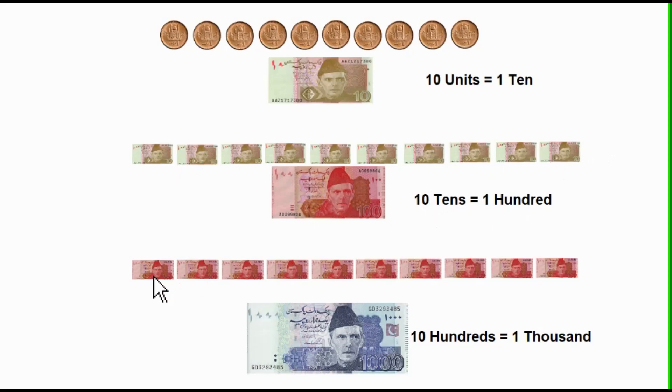Same way, 10 hundred-rupee notes. 1, 2, 3, 4, 5, 6, 7, 8, 9, 10 is equal to 1000. So 10 hundreds, 10 hundreds is equal to 1000.